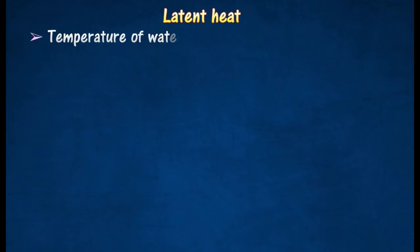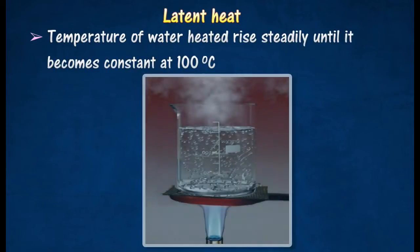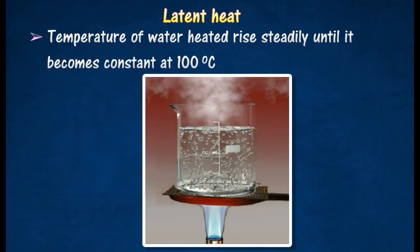For example, when water is heated, its temperature will rise steadily until it reaches 100 degrees Celsius. Once the water has begun to boil, its temperature will remain constant at 100 degrees Celsius, even though it continues to absorb heat from the gas flame.